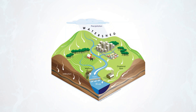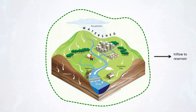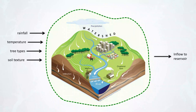Let me give you an example. Imagine we have a watershed model and we want to investigate what factors are primary controls of the inflows to the reservoir behind the dam, and what factors do not have a big influence on the inflows. This is an important question because our water supply can depend on that inflow. The possible controlling factors could be rainfall, temperature, tree types, soil texture, urban drainage, farming activities, groundwater, and many more.